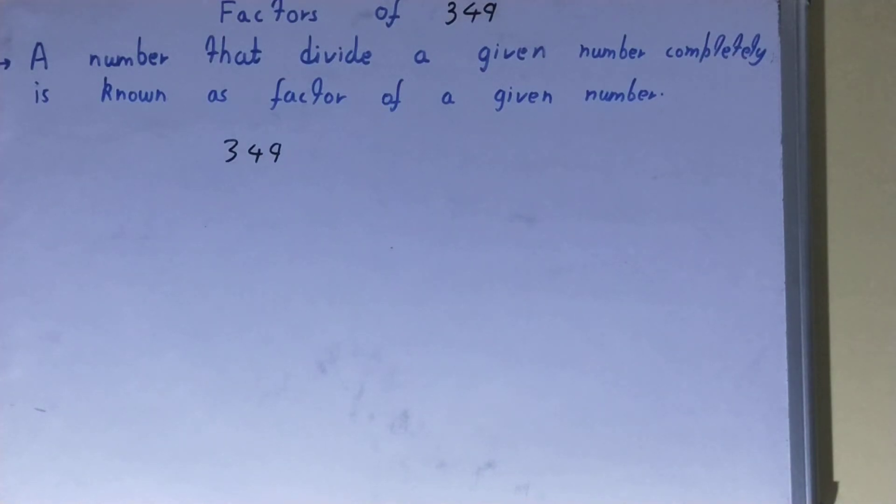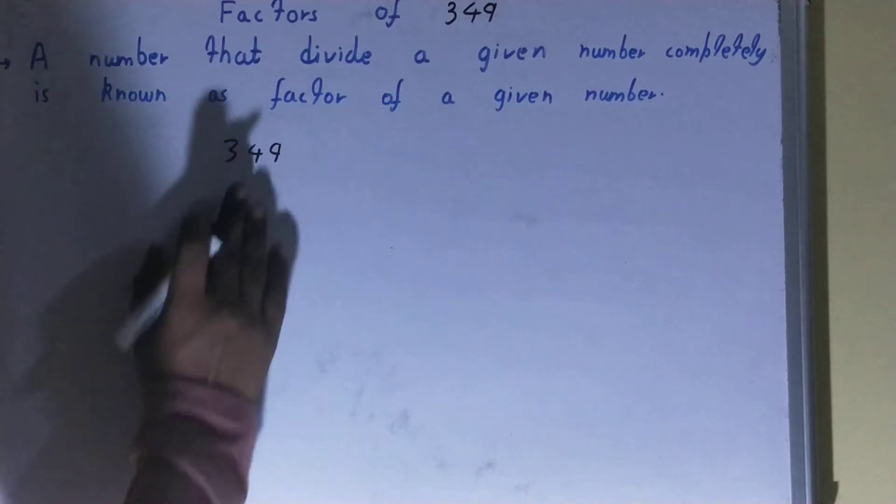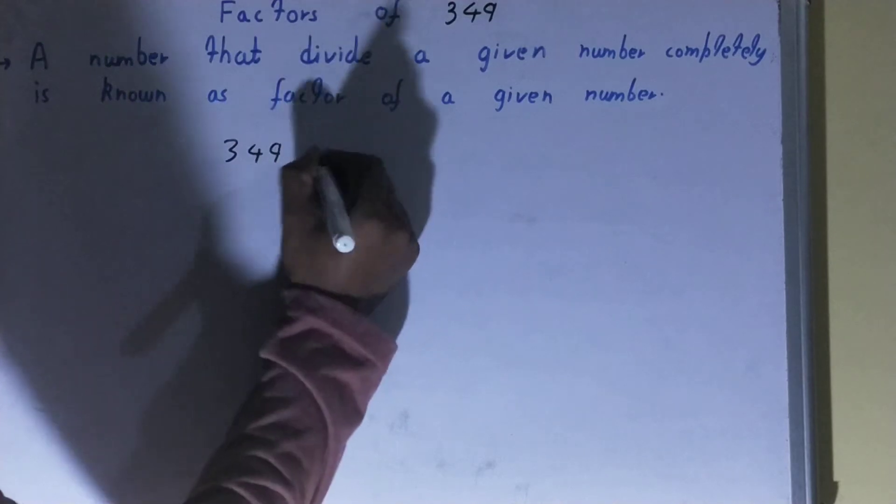Now this thing is very important because if the number is prime, your work will become a lot simpler. So if you talk about the number 349, it is a prime number.